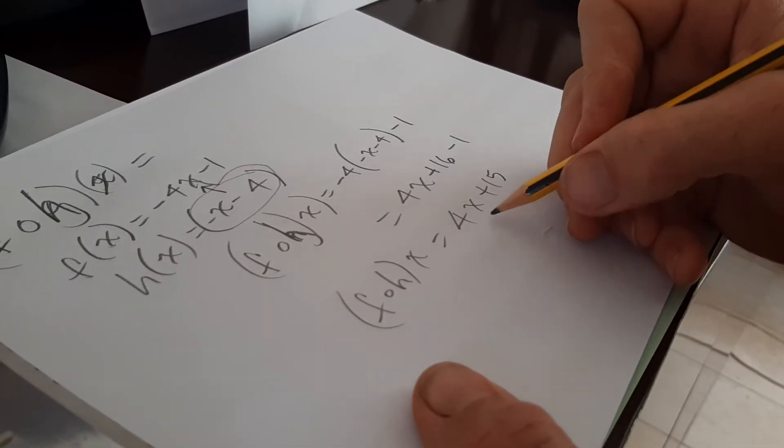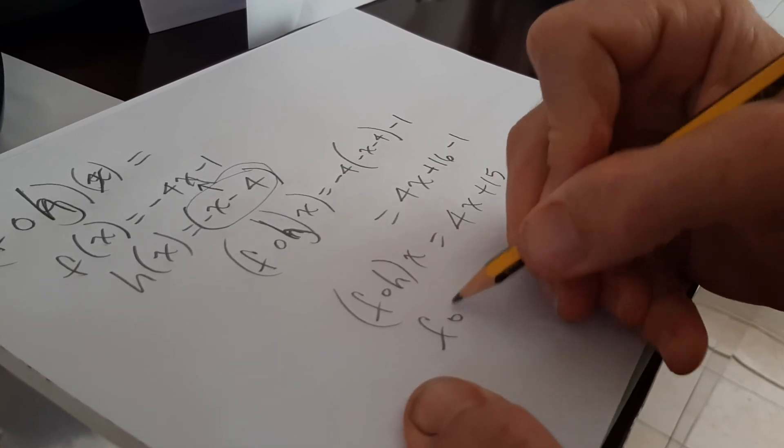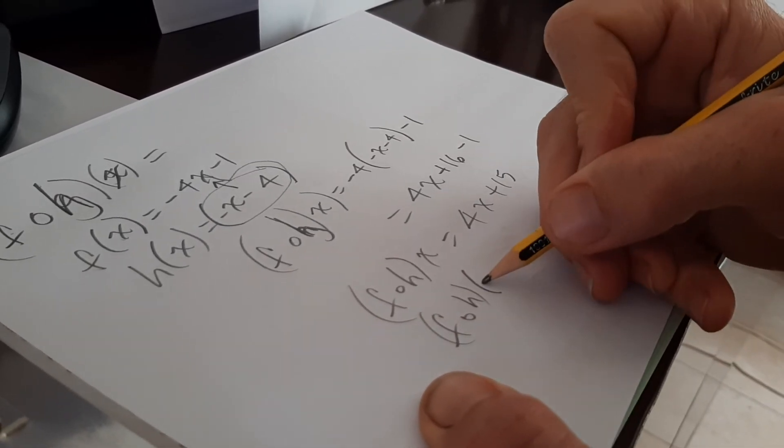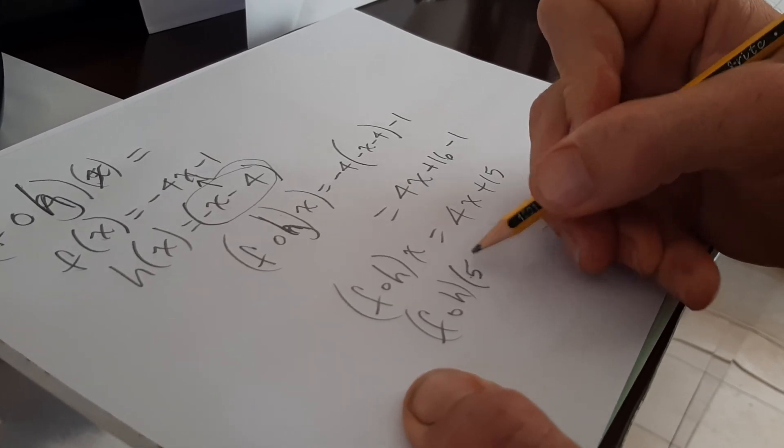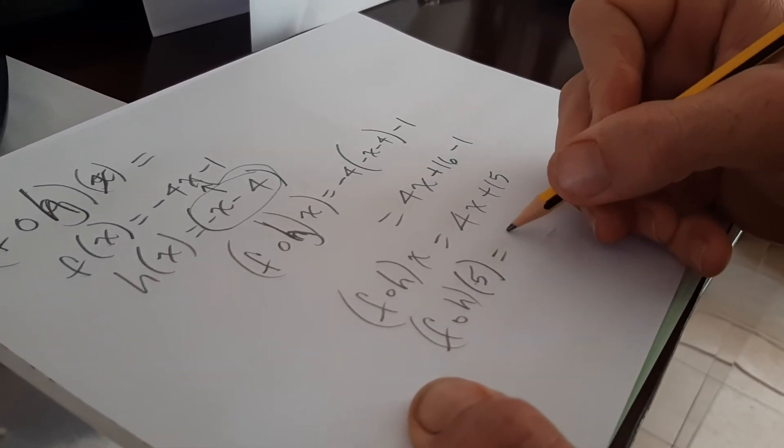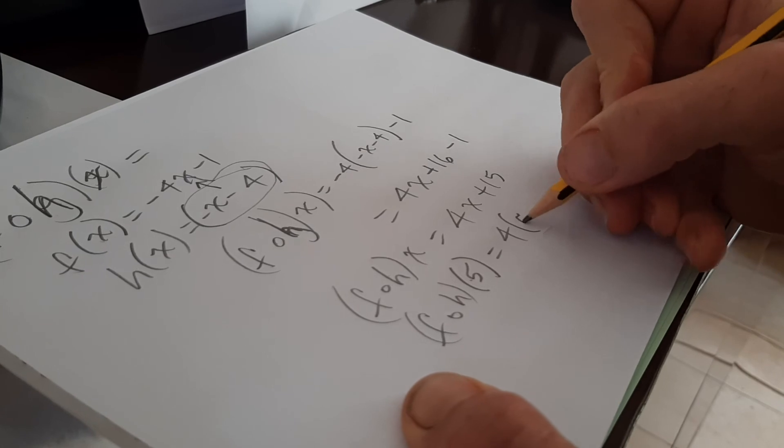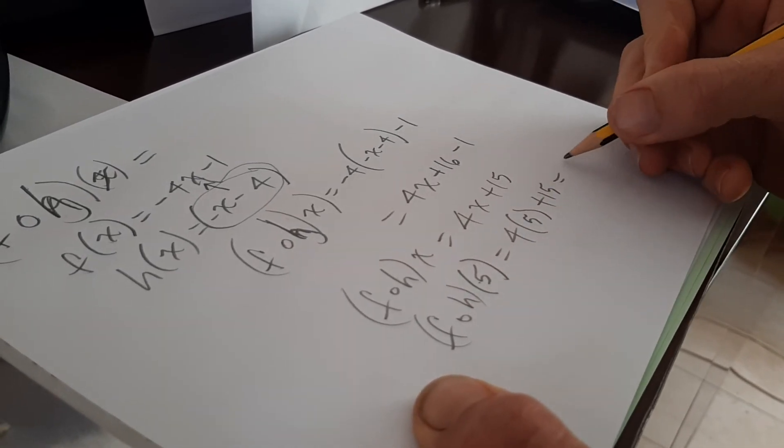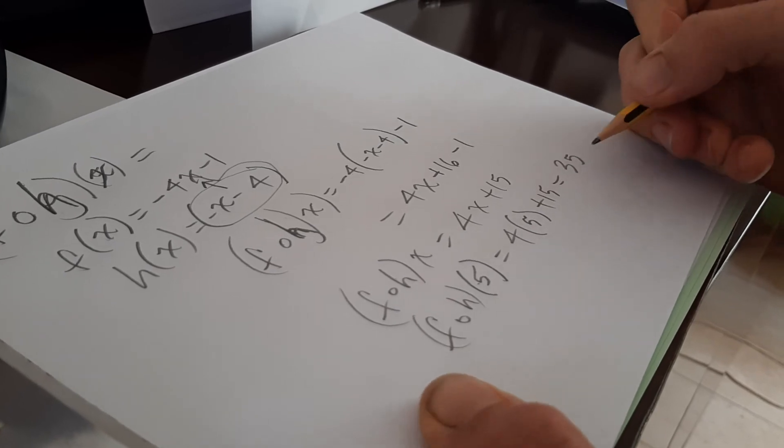So f of h of x, okay? And now I can substitute in f of 5. It wants that. So I just substitute it in, right? 4 times 5 plus 15. 20 plus 15.